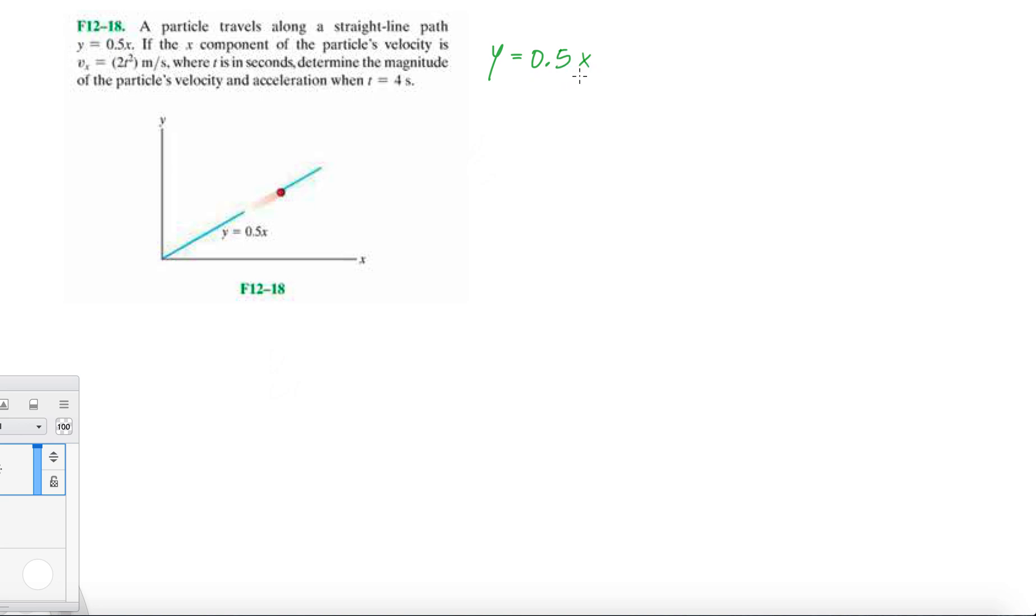We need the y equation in terms of time. They also give us vx = 2t². In order to figure out the velocity in the y direction, we need to get the position function in terms of x, or the position function in the x direction.